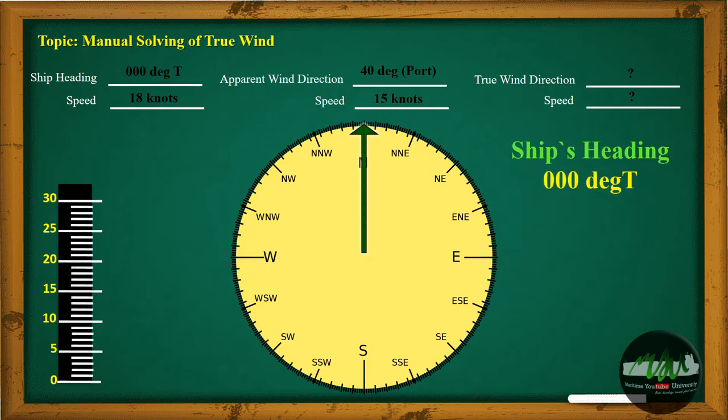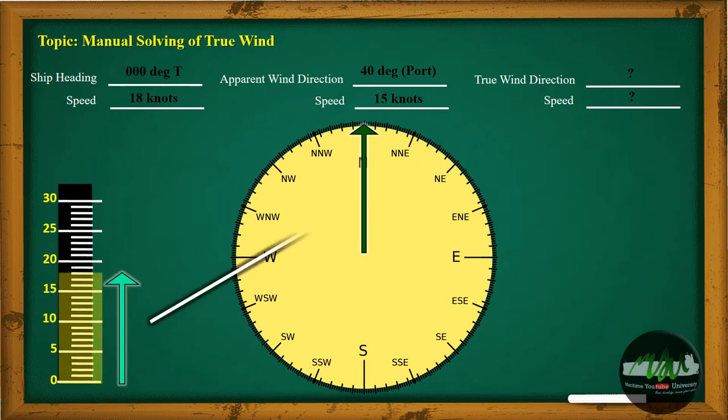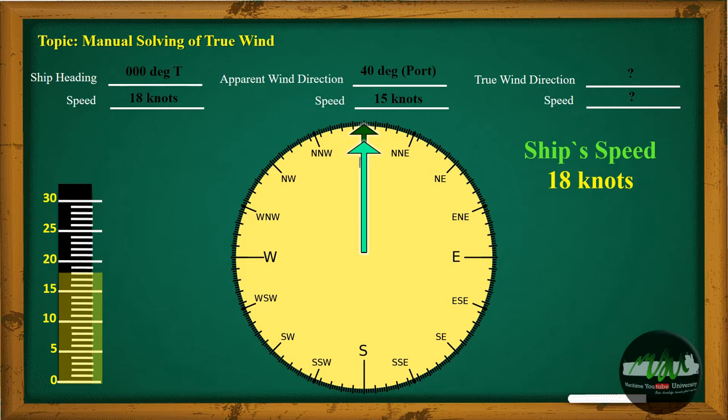This is the heading of the ship, 000 degrees true. While this is the ship's speed, 18 knots.